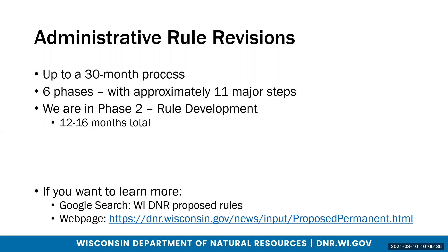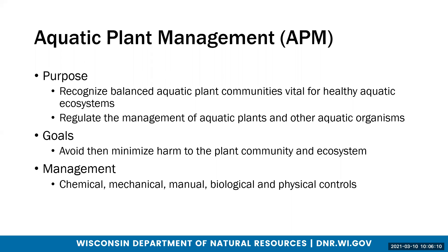If you want to learn more about the administrative rule process, there are a lot of great resources on the DNR's website if you want to do a deep dive. You can simply Google search 'Wisconsin DNR proposed rules' and that web page will pull up. The aquatic plant management program's purpose is to recognize that balanced aquatic plant communities are vital for healthy aquatic ecosystems. Because the department and the state recognize the necessity of aquatic plant communities, it is important that we regulate how and when the management of aquatic plants and other organisms occurs.